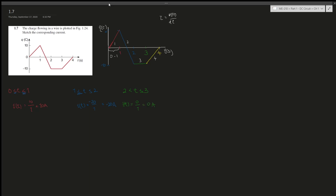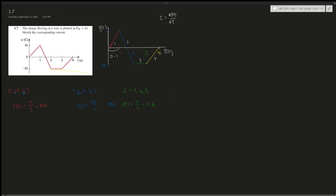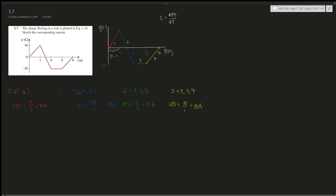For the last section, from t = 3 to t = 4, the charge is going up again as a linear line. The change in y is 10 over 1, which gives us 10 amperes.